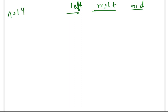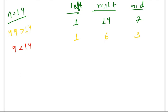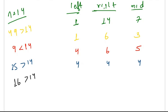Let's try with n equals 14. Left is 1, right is 14, mid is 7. Since 7 squared (49) is greater than 14, right becomes 6. Left is 1, mid is 3. Since 3 squared (9) is less than 14, left becomes 4. Right stays 6, mid is 5. Since 5 squared (25) is greater than 14, right becomes 4. Left is 4, mid is 4. Since 4 squared (16) is greater than 14, right becomes 3. Now left (4) is greater than right (3), the loop terminates, and we return false.